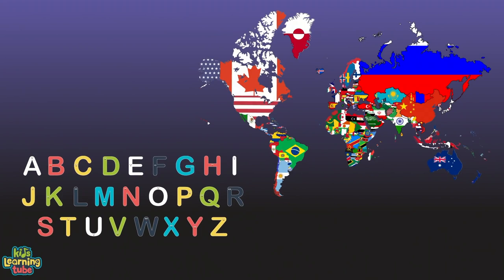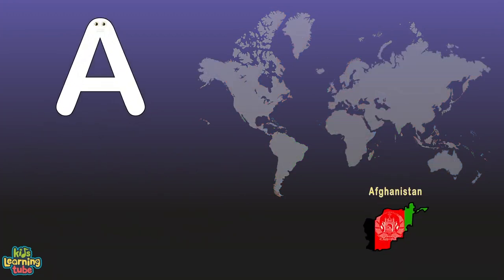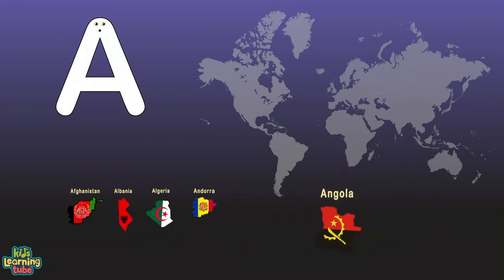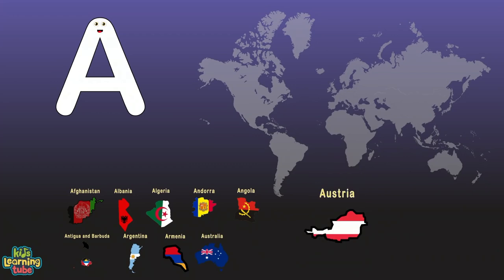Here are the world's countries from A to Z in this song in order while learning your ABCs. A is for Afghanistan, Albania, Algeria, Andorra, Angola, Antigua and Barbuda, Argentina, Armenia, Australia, Austria, and last is Azerbaijan.